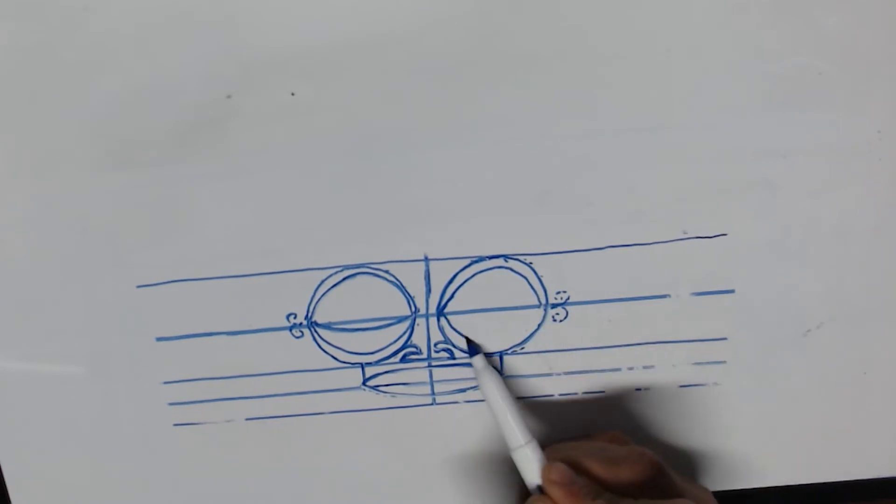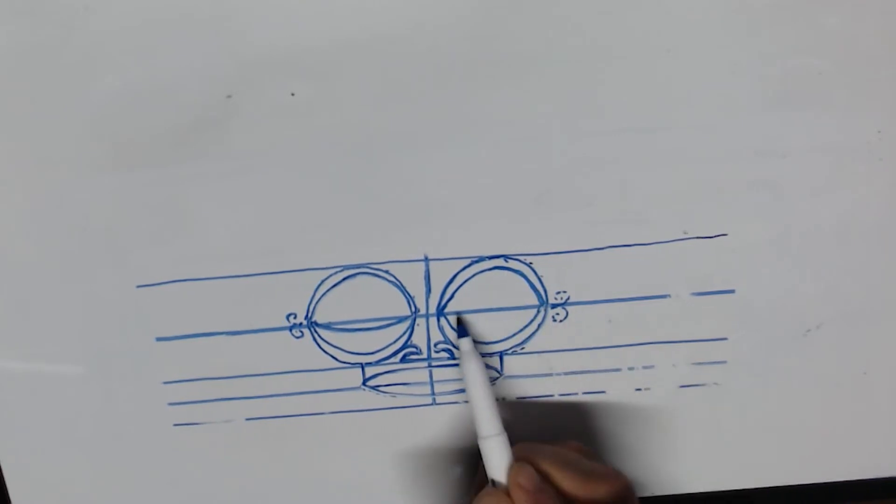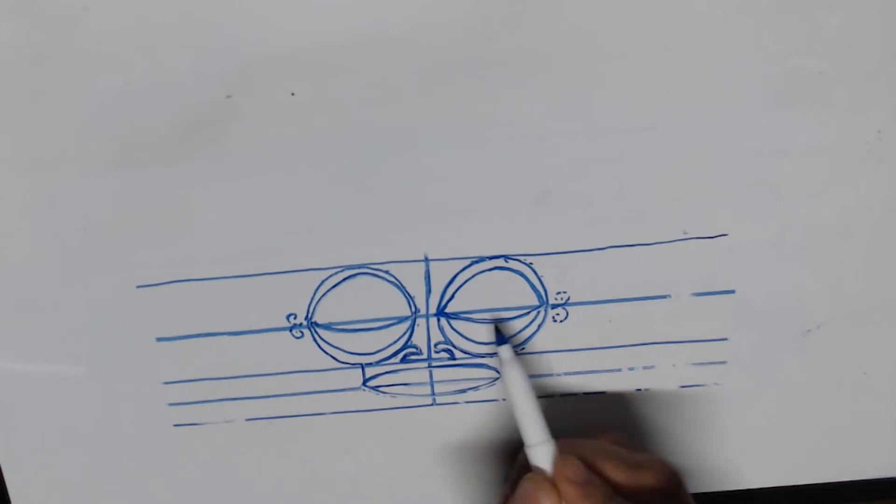Now there's different variations of eyes. Like, for example, you can do like this, and then put another symbol here.